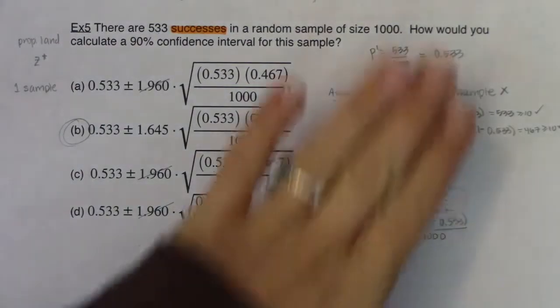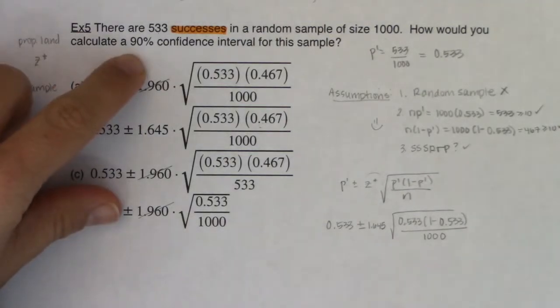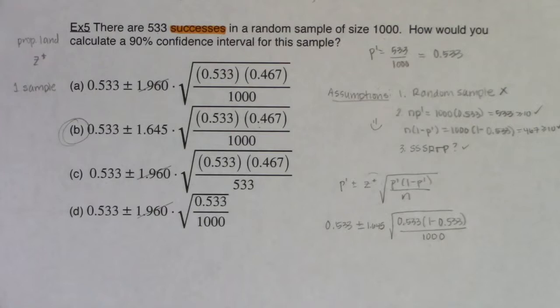And again, you didn't have to go through all the shenanigans. I would argue if you were doing this, if you saw it was 90% confidence or the confidence level was 90%, you could actually get to B pretty quickly because that's the only one with the correct number for the critical value. So we're going to try another multiple choice question together on the next page. I'll see you in a bit.